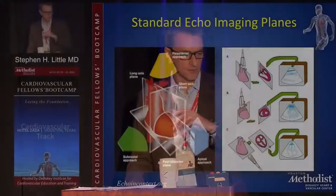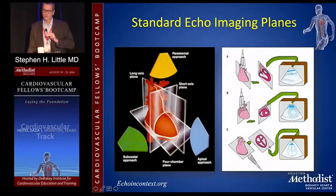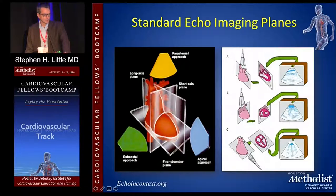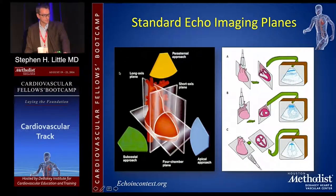The basic thing for echo is there are a number of standard views — the workhorse views — to create an image of the myocardium and the valves, and even the structures around the heart, but also fundamental views to get Doppler angulation to measure flow and pressure. The apical view, the parasternal view, and the subcostal are the three workhorse views.